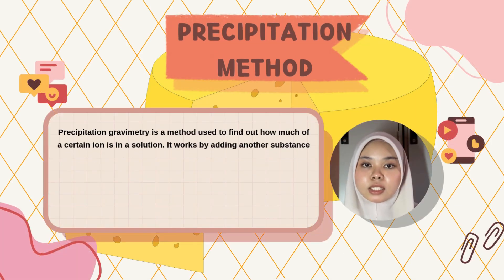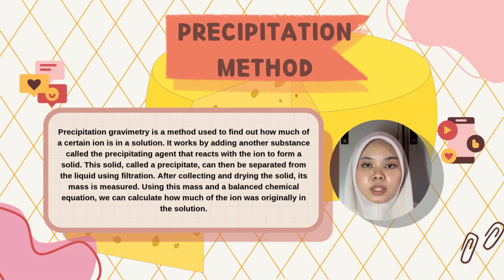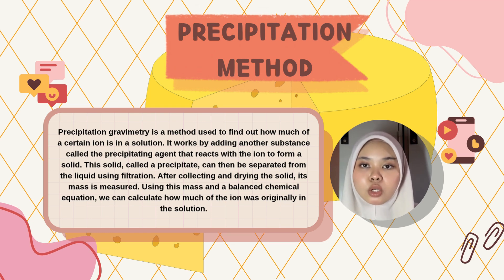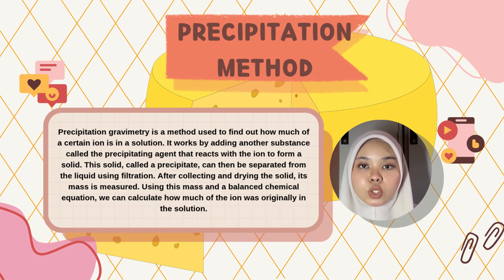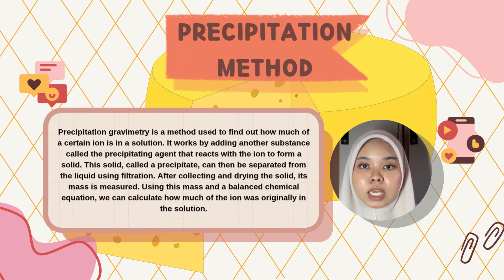Now let's talk about the precipitation method. Precipitation gravimetry is a method used to find out how much of a certain ion is in a solution. It works by adding another substance called the precipitating agent, which reacts with the ion to form a solid. This solid, called a precipitate, can be separated from the liquid using filtration. After collecting and drying the solid, its mass is measured. Using this mass and a balanced chemical equation, we can calculate how much of the ion was originally in the solution.